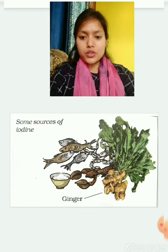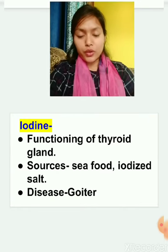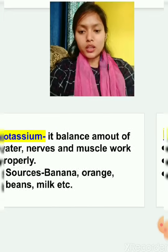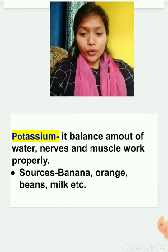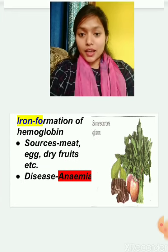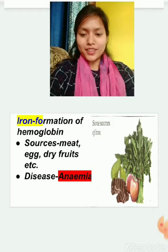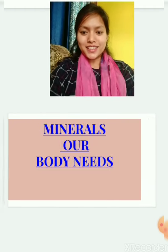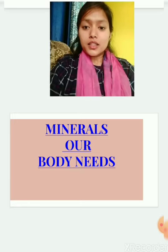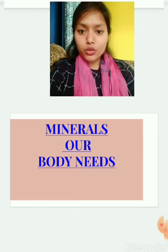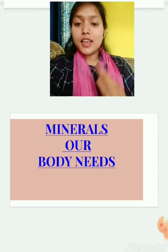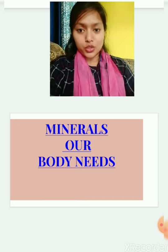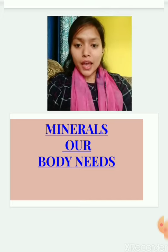To recap, iodine is important for our thyroid. Magnesium helps in making protein in our body. Potassium balances the amount of water in our body. Iron helps in the formation of hemoglobin in our blood. Calcium is used for strong bones and teeth. In the next video, we will study about dietary fibers, water, balanced diet, and deficiency diseases.